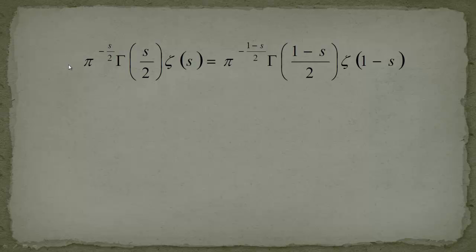The first ingredient is the Riemann functional equation, which we proved in the previous video. We first replaced s by s/2, then used the substitution with pi·n²·t, applied integration rules, and used the property of the Jacobi theta function to arrive at this point.